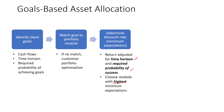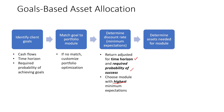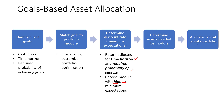If you choose the highest minimum expectations, that module will have the lowest required assets to be invested. Once we have identified the discount rate, the advisor will determine the assets needed for the module. And finally, the advisor will allocate the capital to the subportfolios to construct the portfolio and then combine it into the overall portfolio.